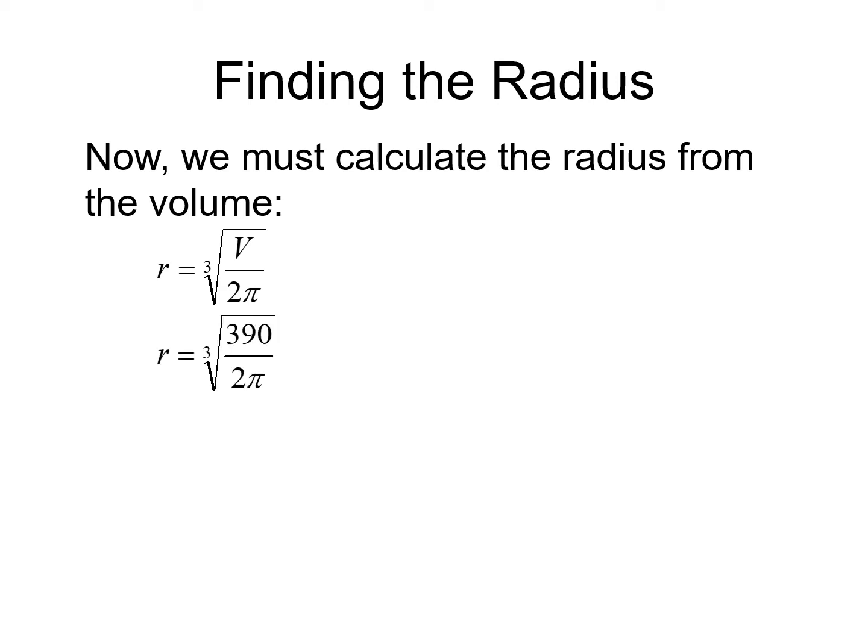So r is the cubic root of 390, which is our volume measure, divided by 2π. If we put this into our calculator, we will get the result 3.96 centimeters.